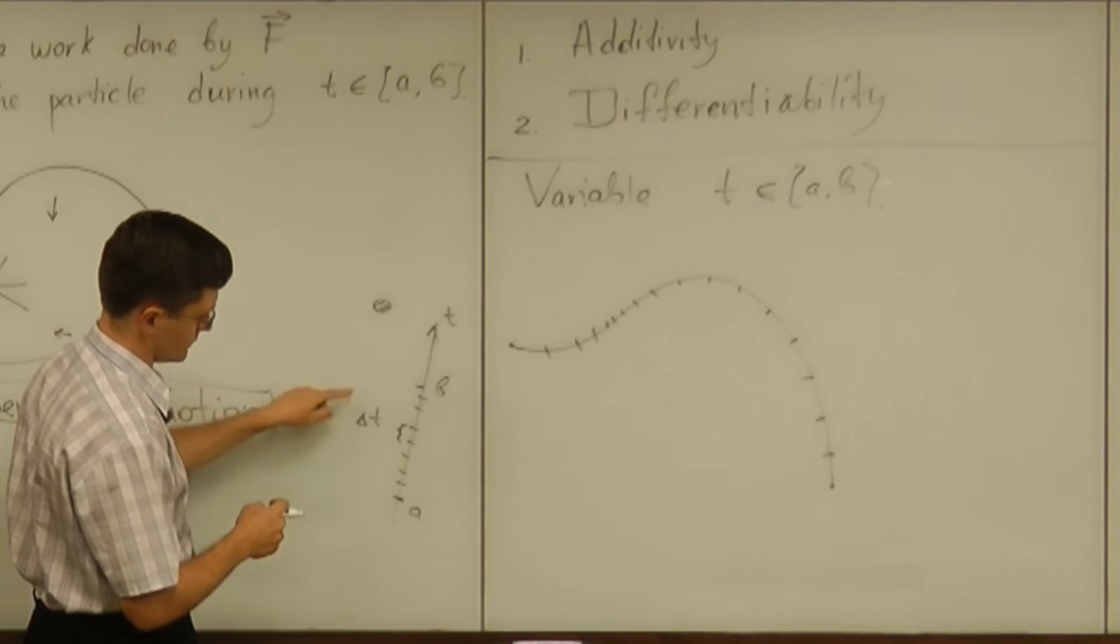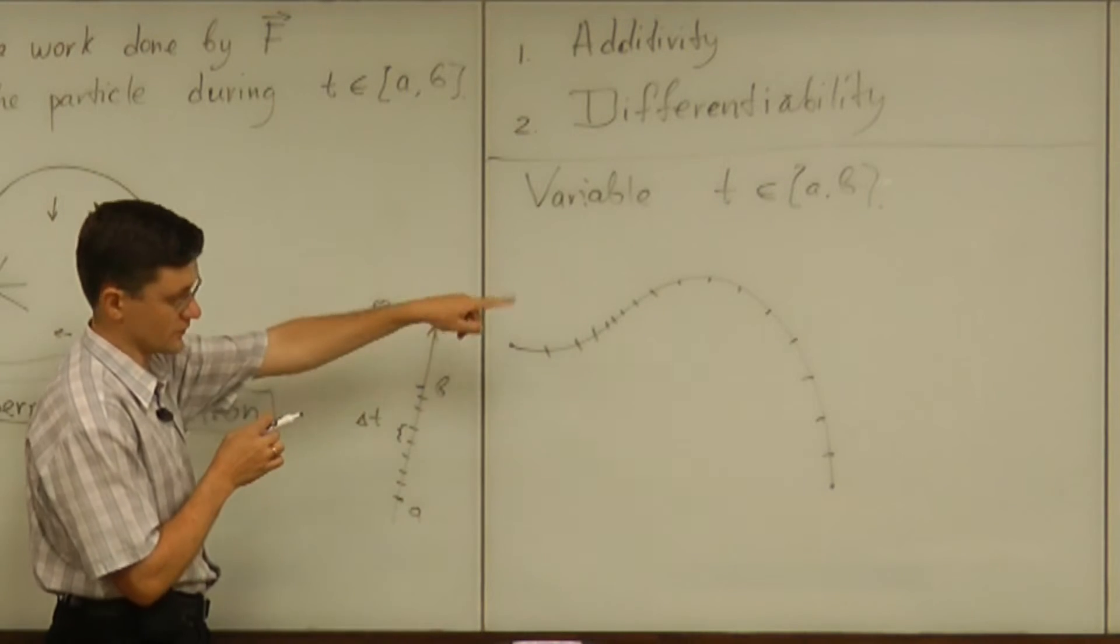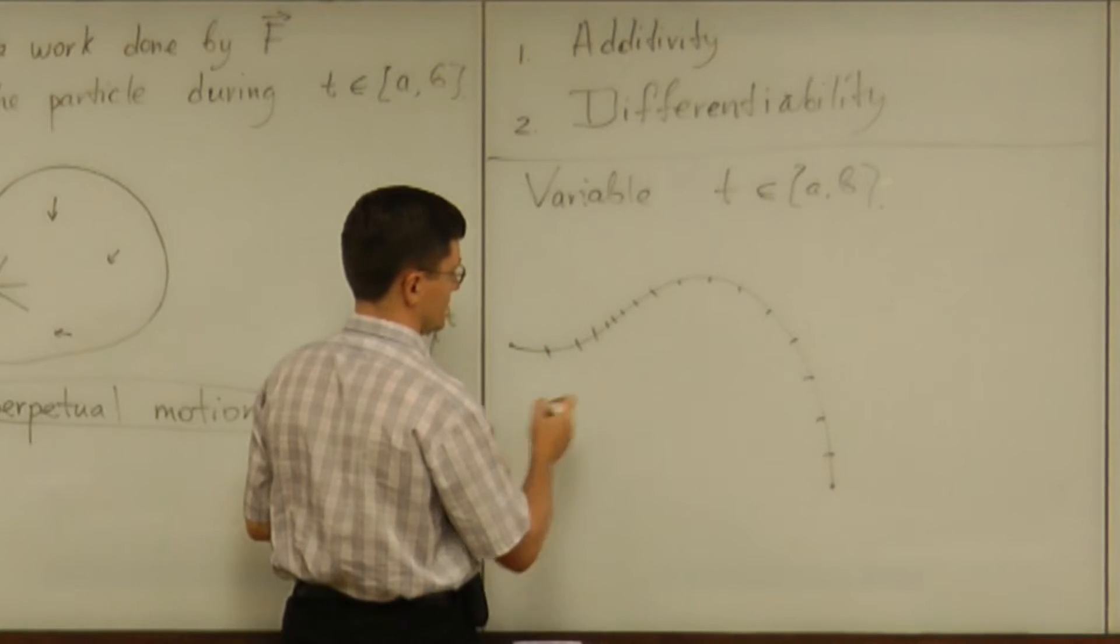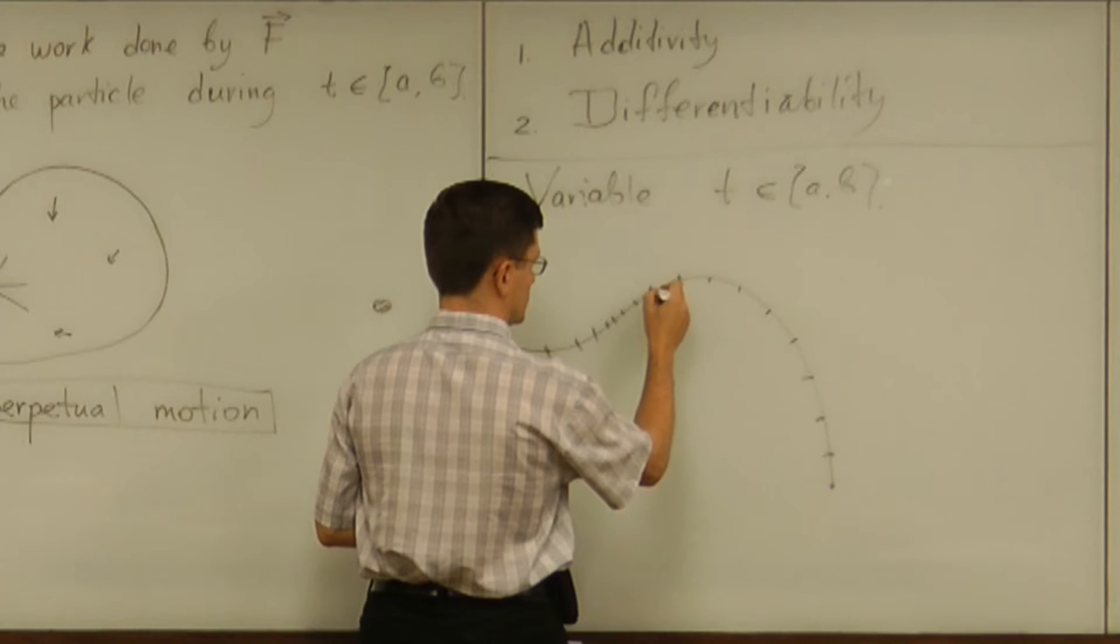But as we assume the delta t goes to zero, all those intervals will be shorter and shorter. Okay. And then what is it that we do?